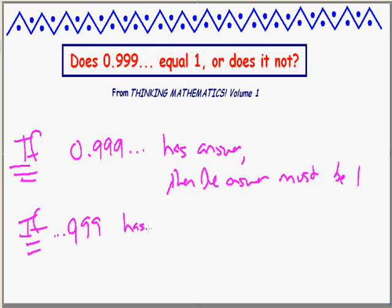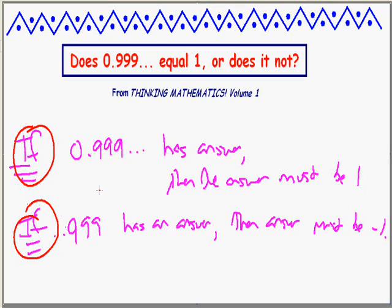If we choose to believe that a whole bunch of nines to the left has an answer, then the answer must be negative one. That's all the mathematics has done. It's never addressed this question.